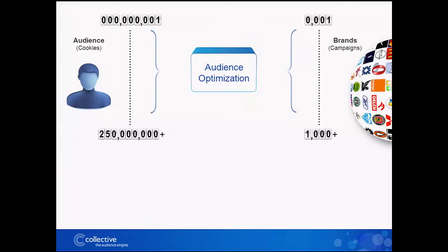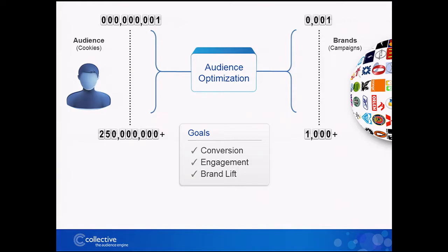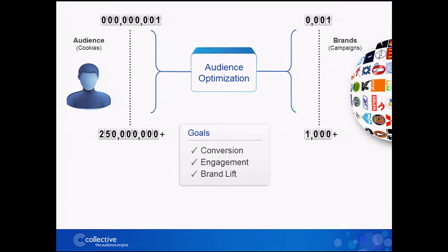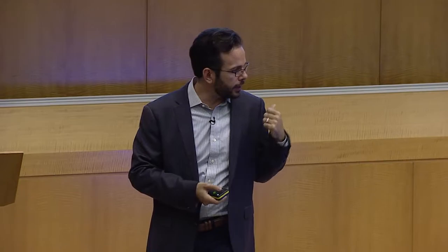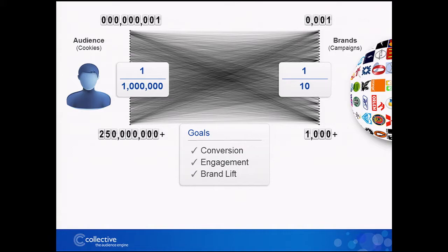On one side we've got thousands of brands executing campaigns; on the other side, 250 million stable users. We want to create this audience optimization system linking the two together to identify individuals likely to convert, likely to engage with an advertisement, or likely to have their minds changed by it — what would be brand lift. To give you a sense of the complexity, if you drew connections between just one out of a million users and one out of ten brands, those would be the actual lines of assignment we're making on a given day. How do you make all of those assignment decisions every day in an optimal fashion?